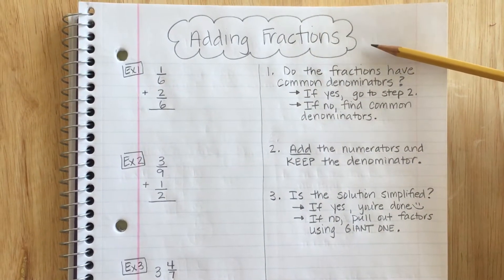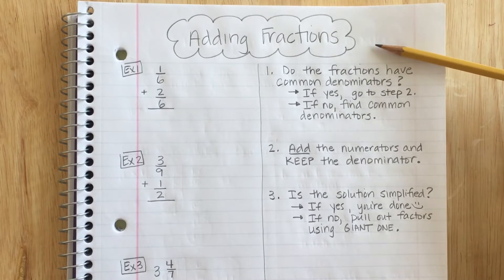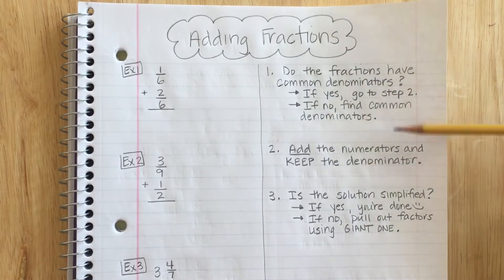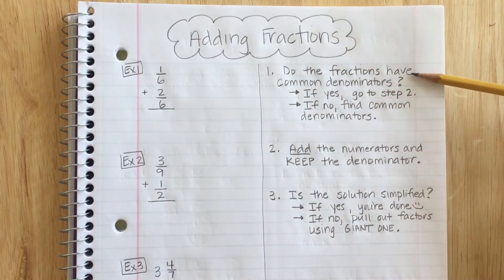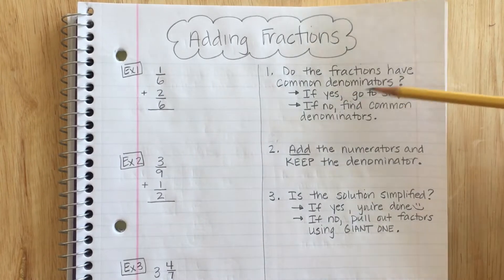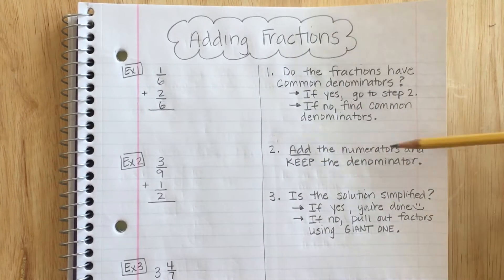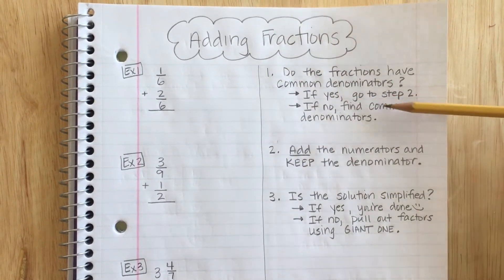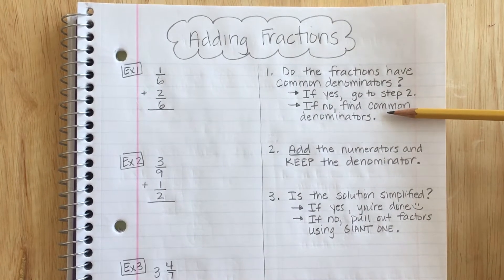Remember, when adding and subtracting fractions, we must have common denominators. So that's the first thing we will look for. Step one, do the fractions have common denominators? If yes, then you actually go to step two and keep going. If no, you will need to stop and find common denominators.